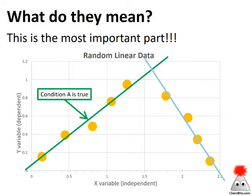If you're doing a chemistry experiment, often condition A will have to do with a limiting reagent. So condition A might be that one of the reagents is limiting.